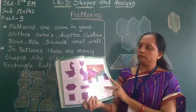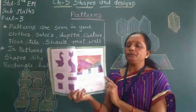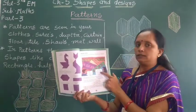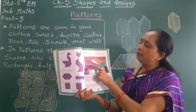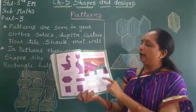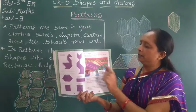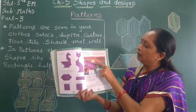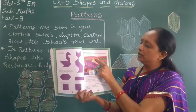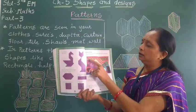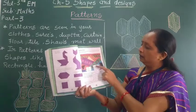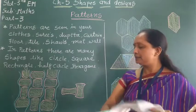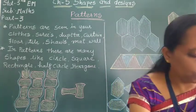Here on page number 69, there are some patterns given. You can see there are so many shapes using pattern and repeated shapes like triangle, hexagon, square, circle, half circle, then mango shape. So in patterns, many shapes are used.